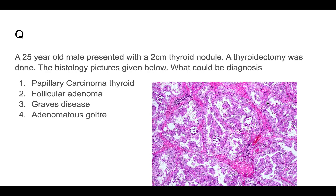Question one: a 25-year-old male presented with a two-centimeter thyroid nodule. A thyroidectomy was done and the histology picture is given. The options are papillary carcinoma thyroid, follicular adenoma, Graves disease, and adenomatous goiter. The key is the histology — you should appreciate the papillae with a fibrovascular core. The answer is papillary carcinoma of the thyroid.